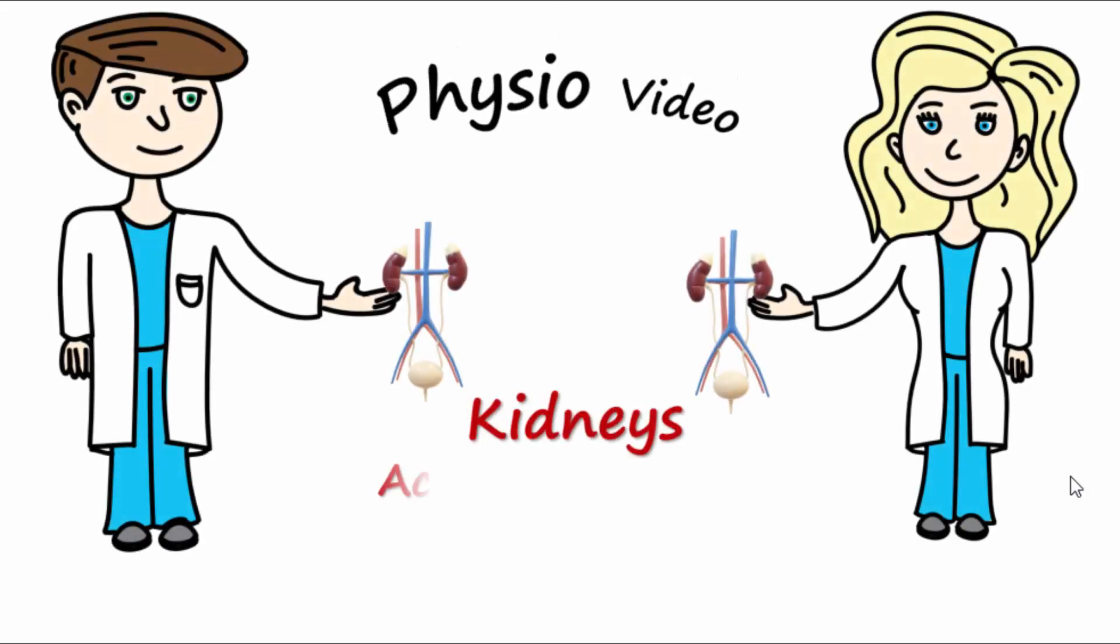Let's talk about type A and type B cells of the kidney and their function to regulate blood pH.